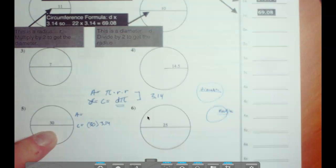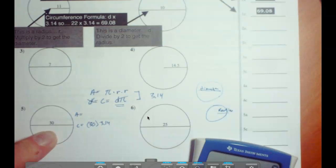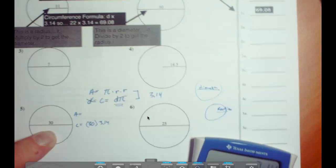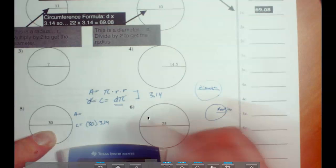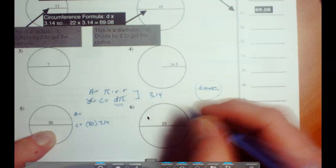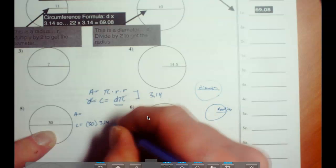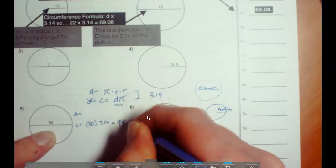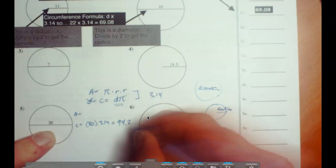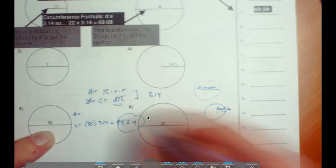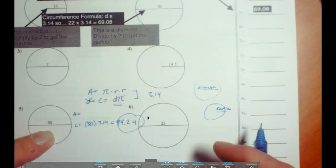Okay, so we just pop that in and we'll get it. So take the 30 times the 3.14 and that equals 94.2. And we don't have a measure there, so we'll just use u for units.